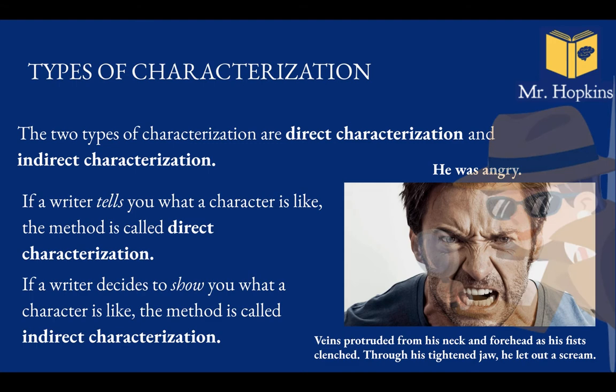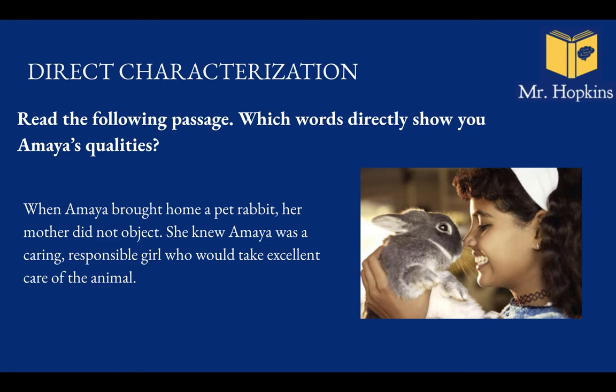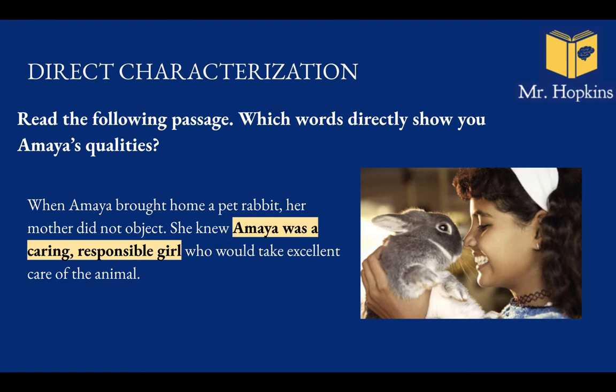Here's an example of direct characterisation. Can you find the words which directly show Amaya's qualities? 'When Amaya bought home a pet rabbit, her mother did not object. She knew Amaya was a caring, responsible girl who would take excellent care.' Pretty easy — caring and responsible. Tells me exactly what she's like; I don't need to guess.